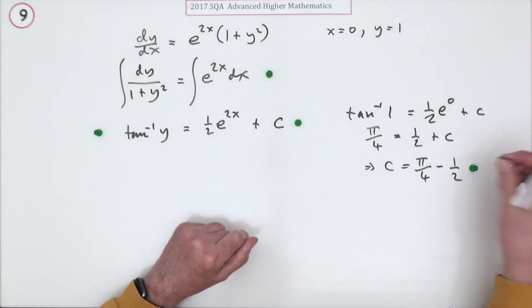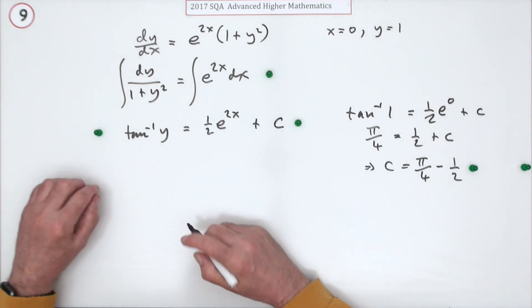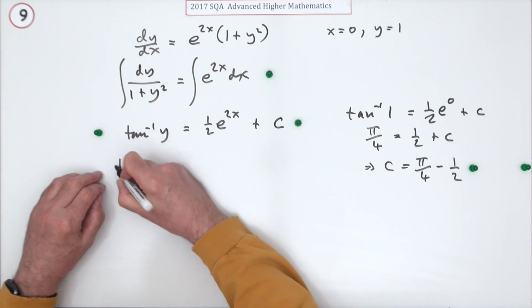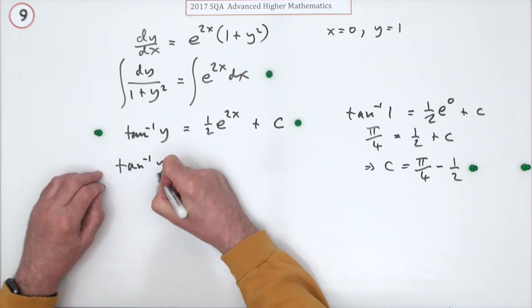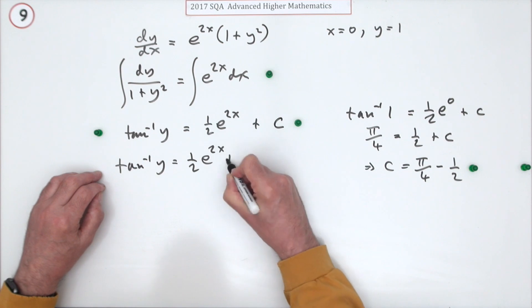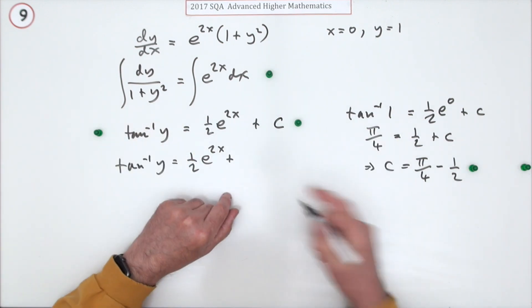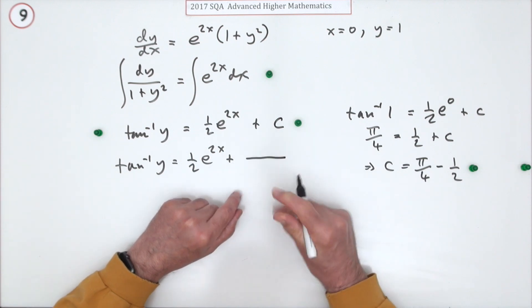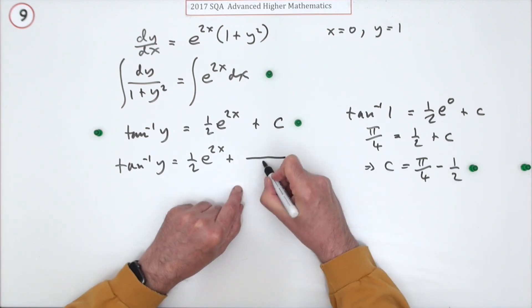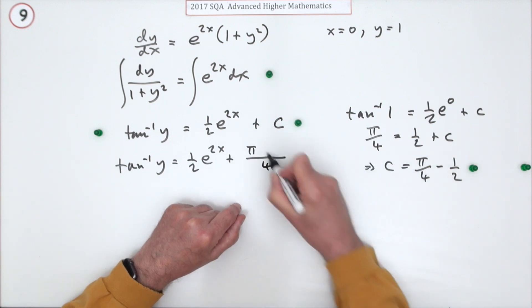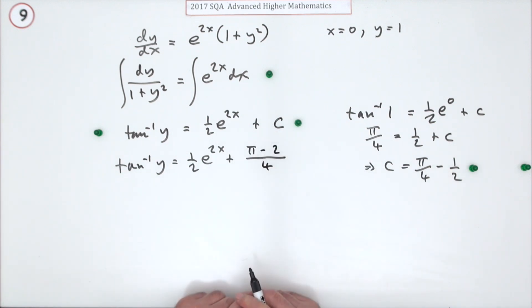Now all that remains for this final mark here is just to put it all together. It'll pop in first of all. Inverse tan of y is a half of e to the 2x plus these two parts. Now certainly in the marking scheme, they just leave it like that. But I think I'll try and gather them up into a single constant by putting them over 4. Which means that'll be pi but that'll have to turn to minus 2 upon 4.